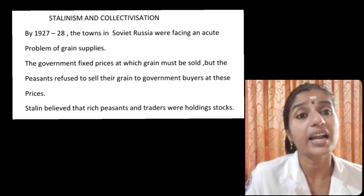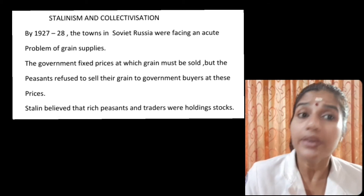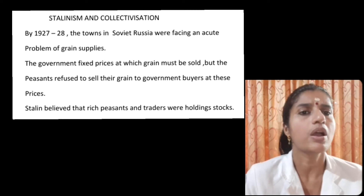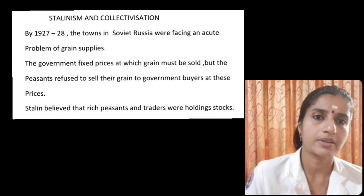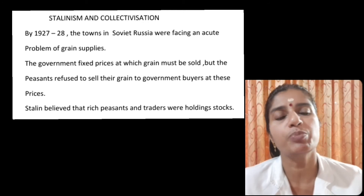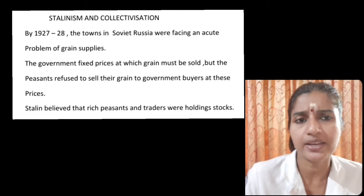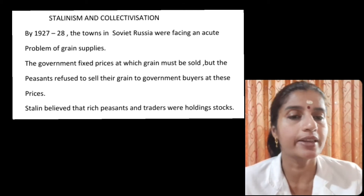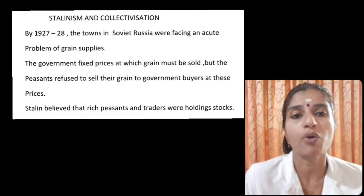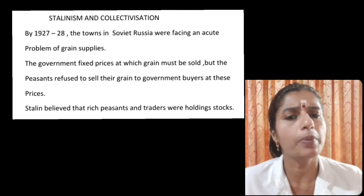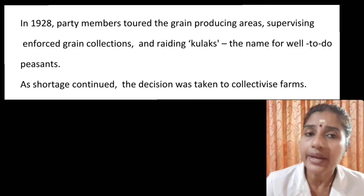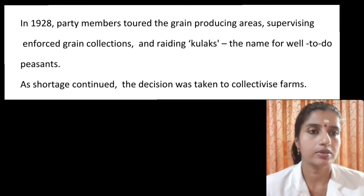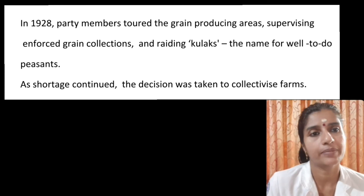Next, about Stalin and collectivization. Stalin headed the party after the death of Lenin. By 1927-28, the towns in Soviet Russia were facing an acute problem of grain supplies. The government fixed prices at which grains must be sold, but the peasants refused to sell their grains to government buyers at these prices. Stalin believed that rich peasants and traders in the countryside were holding stocks in the hope of higher prices, and he decided to confiscate supplies. In 1928, party members visited grain-producing areas and raided kulaks — the well-to-do peasants of Russia.